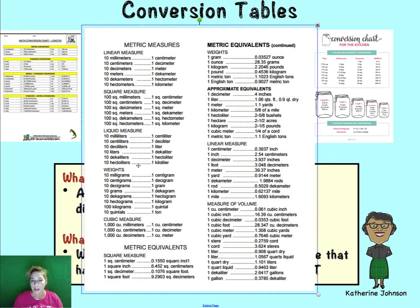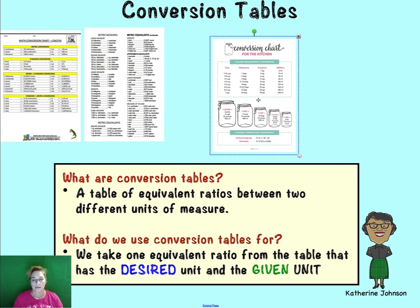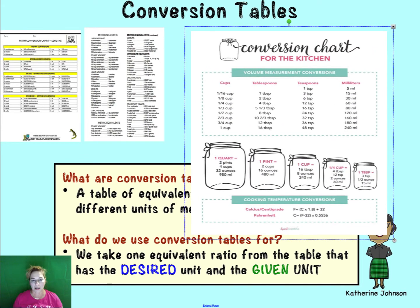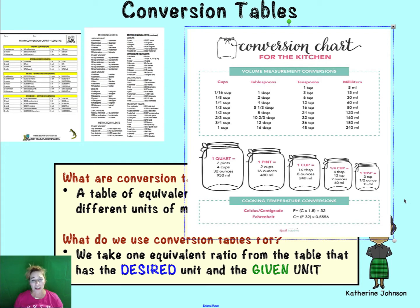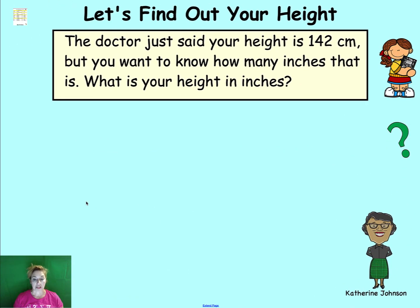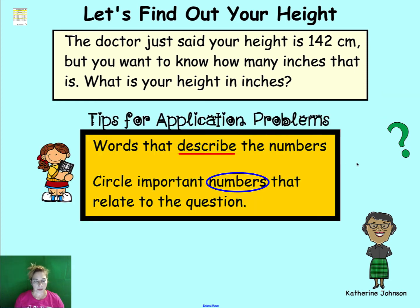There's even a kitchen conversion chart for baking, and one for converting between Celsius and Fahrenheit — those are a bit more complicated than what we're doing today. Now let's find your height in inches. We know you are 142 centimeters, and the question is: what is your height in inches? When reading word problems, circle important numbers — here, 142 centimeters.